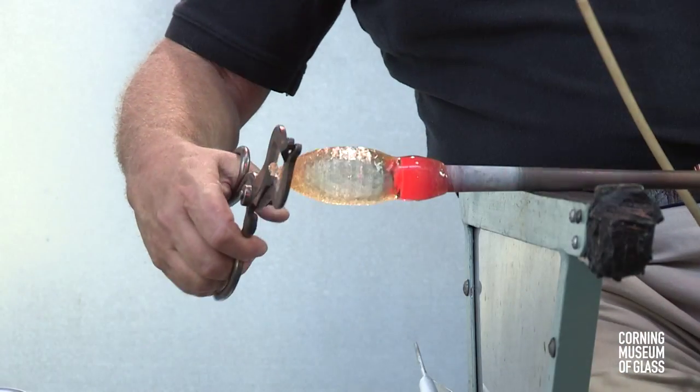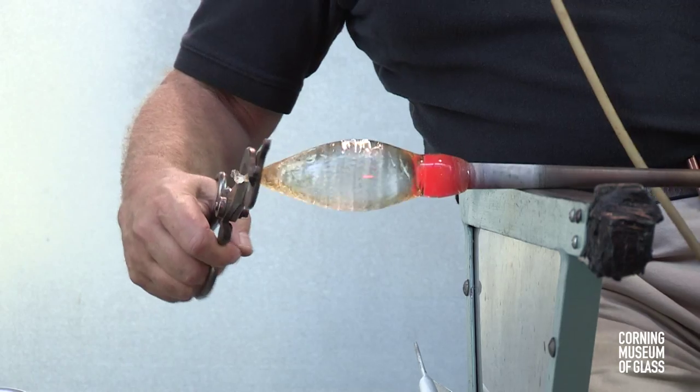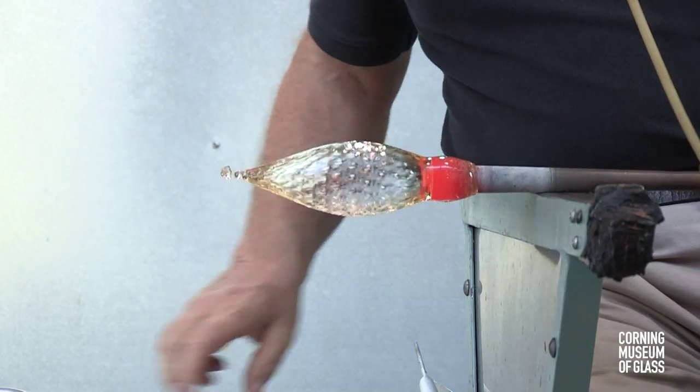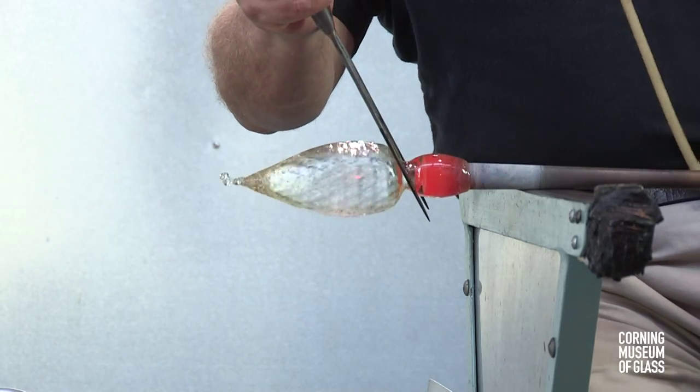While blowing, the end of the bubble is pulled. A neck, or constriction, is made between the vessel body and the blowpipe.